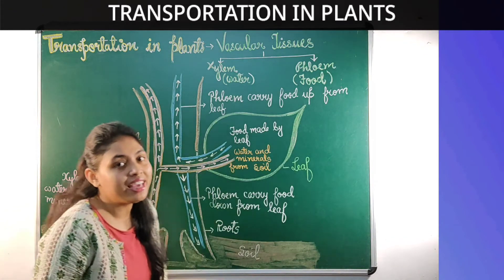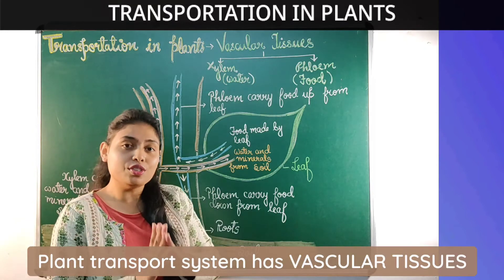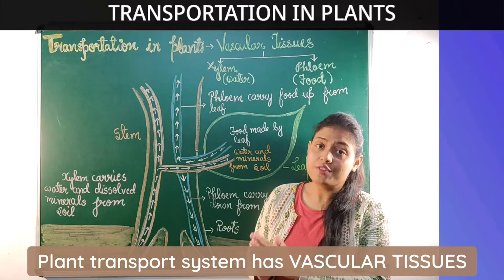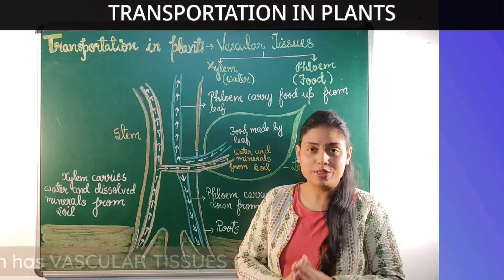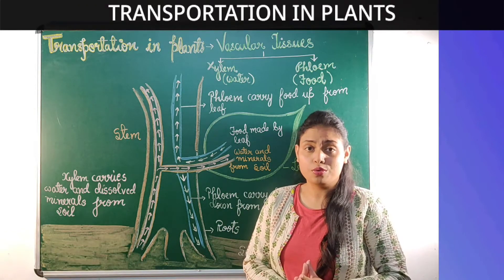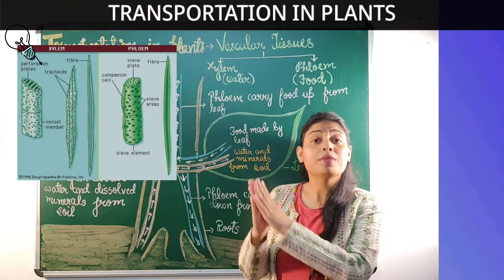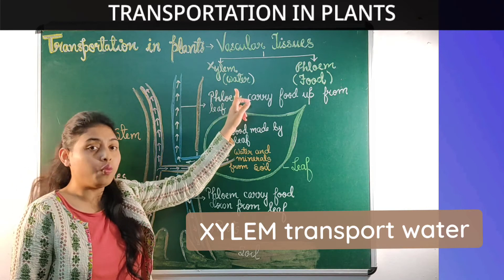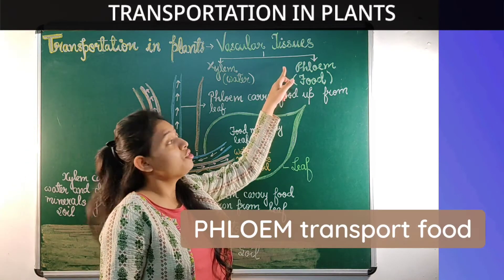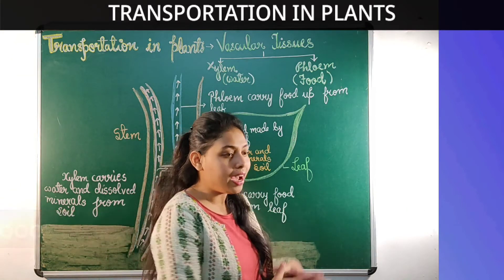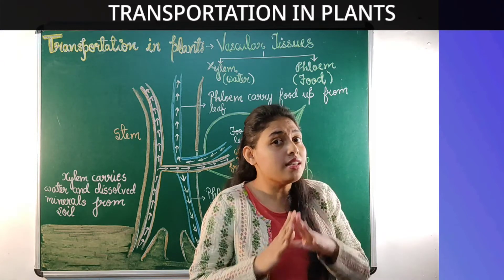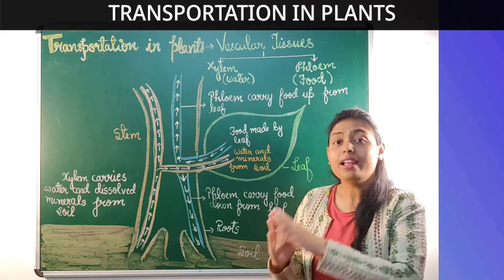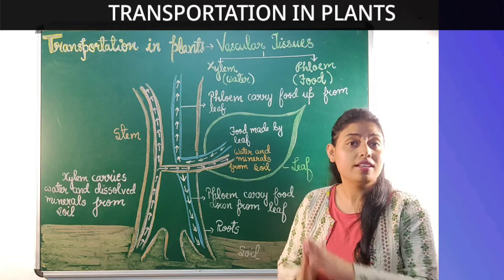The answer is vascular tissues. Vascular tissues are special tissues found in plants which help in transporting food and water. Vascular tissue consists of two special tissues: xylem and phloem. Xylem helps in transportation of water whereas phloem helps in transportation of food. So the transportation system in plants consists of xylem and phloem, which together are known as vascular tissues.